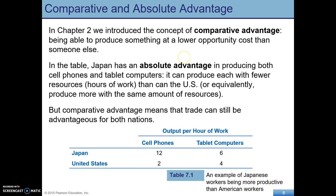Comparative advantage is just being able to produce something at a lower opportunity cost than someone else. This is different from absolute advantage, which is simply being able to produce more of a good or service. Comparative advantage determines what a country should specialize in, and even if one country has an absolute advantage in all resources, trade is still going to be beneficial for both countries.